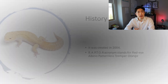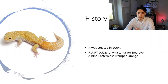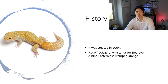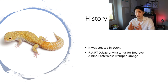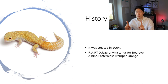Starting with the history, the Raptor was created somewhere around 2004. It's not like a new morph that just popped up randomly from a mutation. Raptor basically consists of two existing lines — one Tremper and one Eclipse. Both of them are recessive, and that's how it was created.